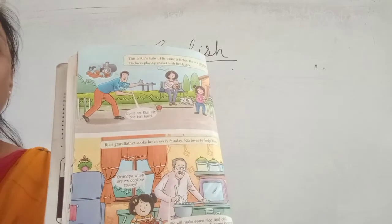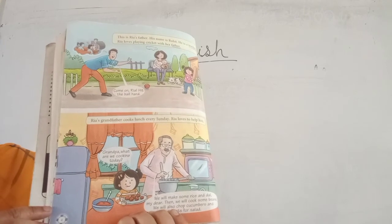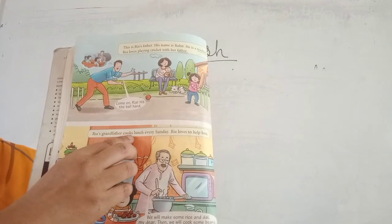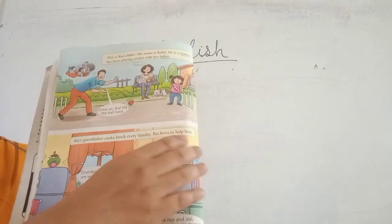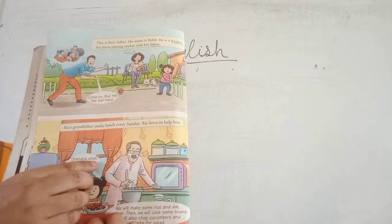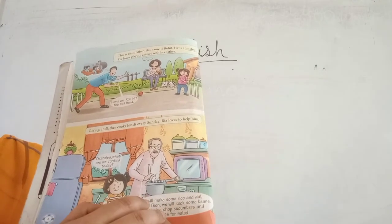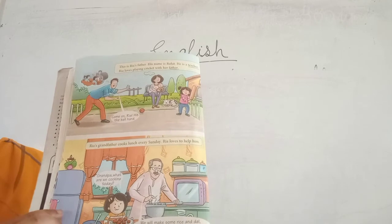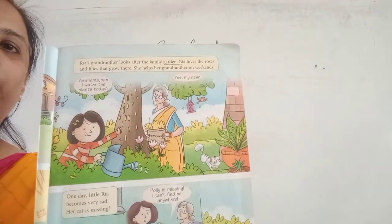Now the next picture. In this picture we will see that Ria's grandfather is cooking lunch. Ria's grandfather cooks lunch every Sunday. Ria loves to help him. Grandpa, what are we cooking today? We will make some rice and dal, my dear. Then we will cook some beans. We will also chop cucumber and carrot for salad.